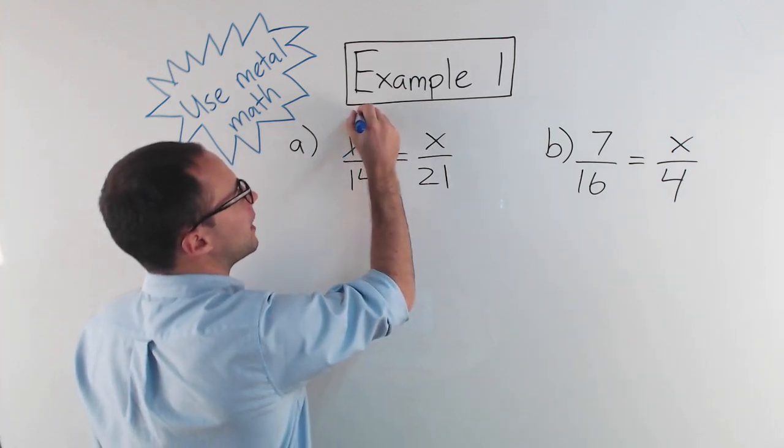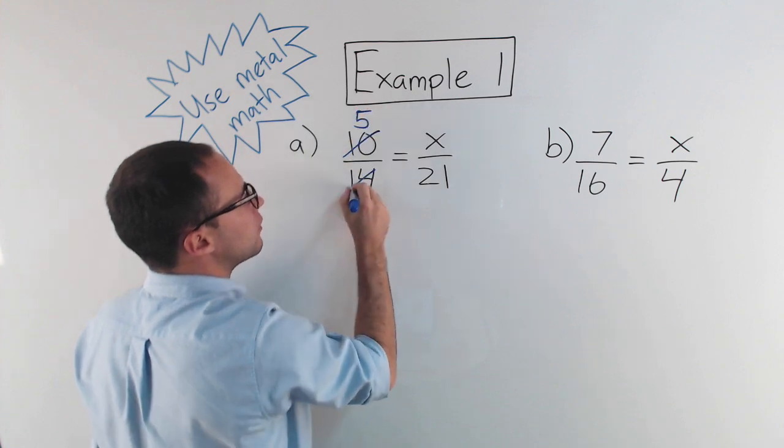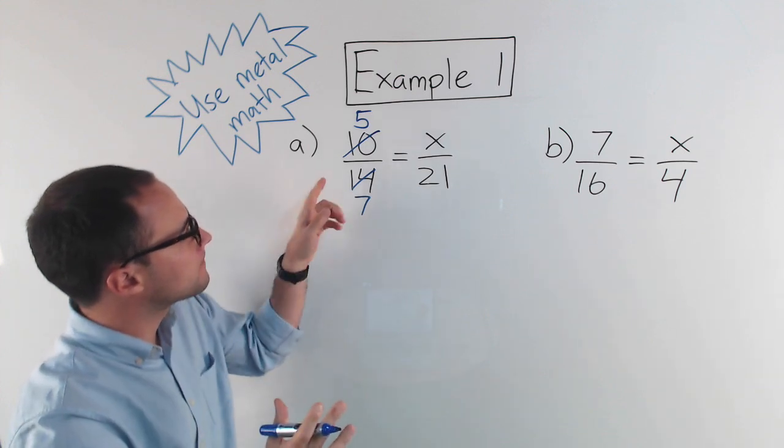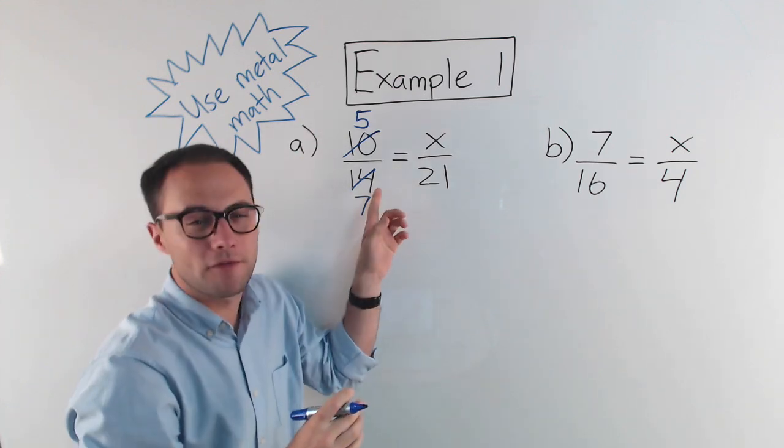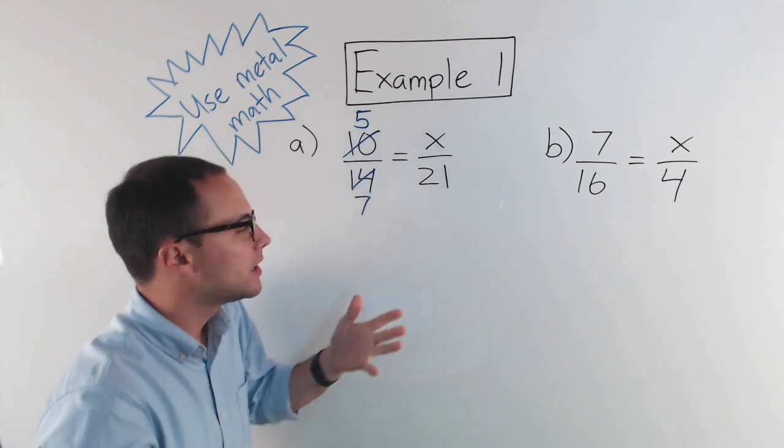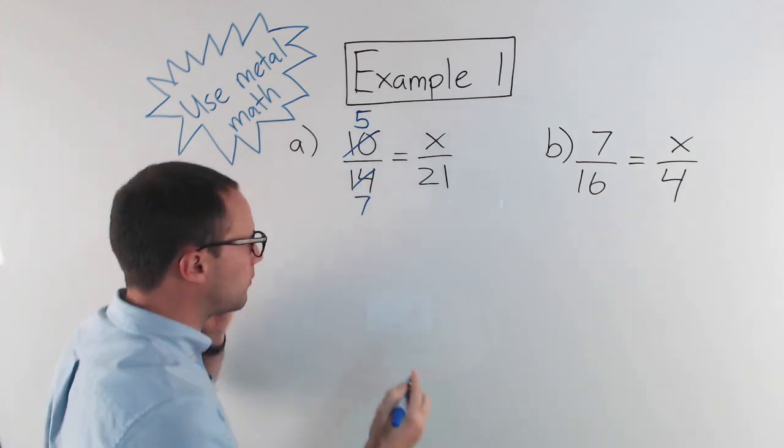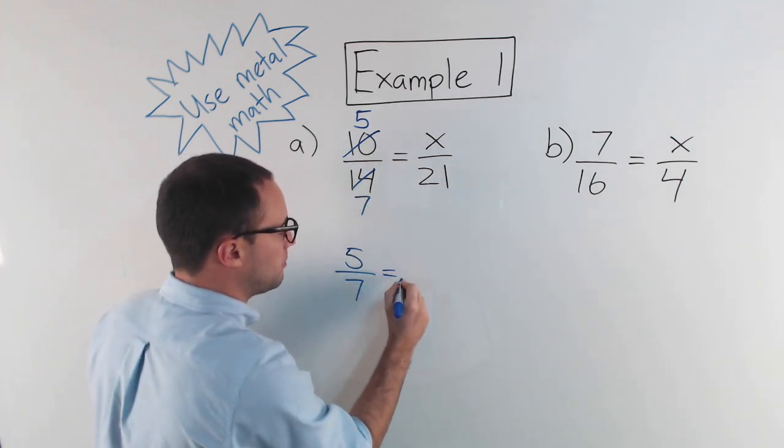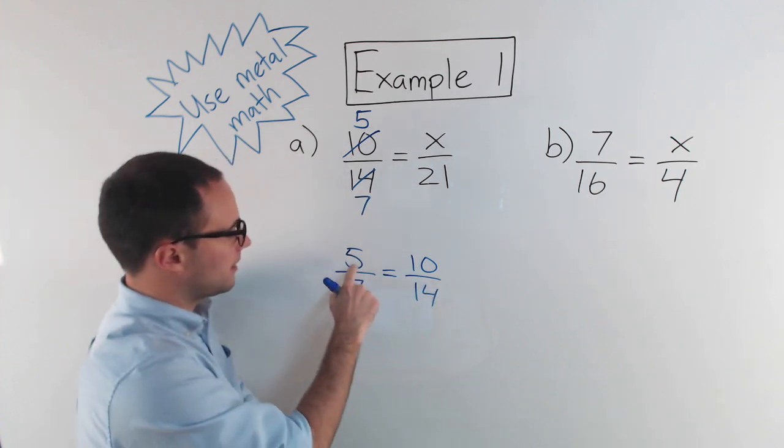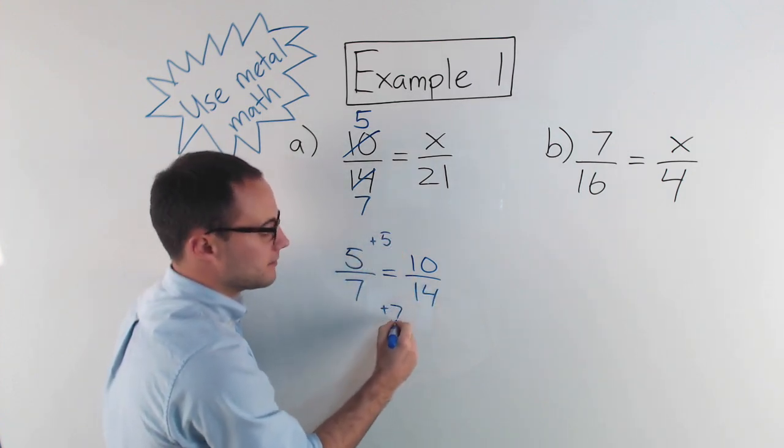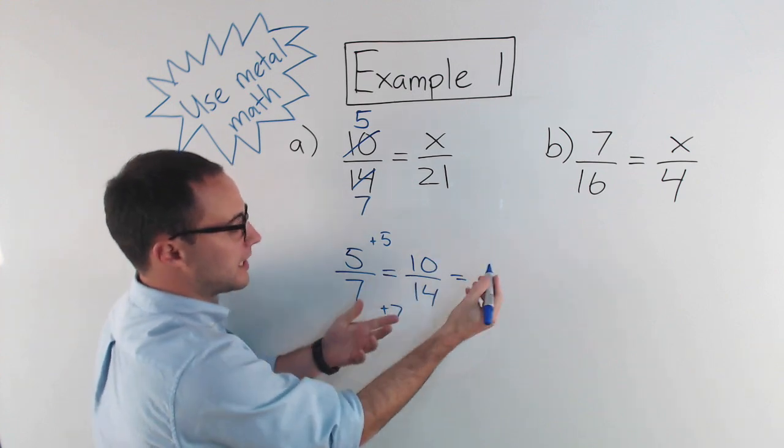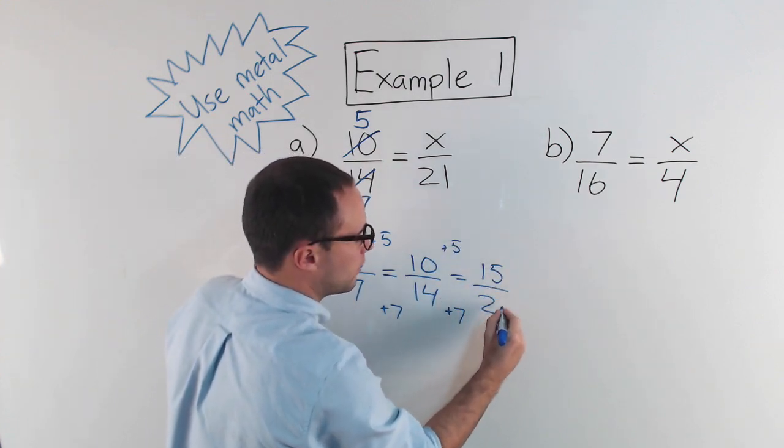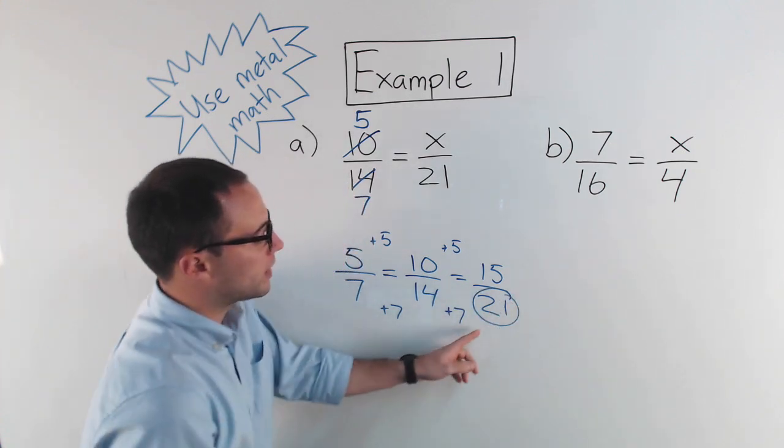I could make that 5 over 7. And now I know that 5 over 7 has to be equivalent to x over 21. So basically, I can think to myself, if my ratio is 5 over 7, another equivalent ratio would be 10 over 14, 15, right? Add 5, add 7. Another one would be doing the same thing. Add 5, add 7 would be 15 over 21. Well, there we go. 21, 21. That means x has to be 15.